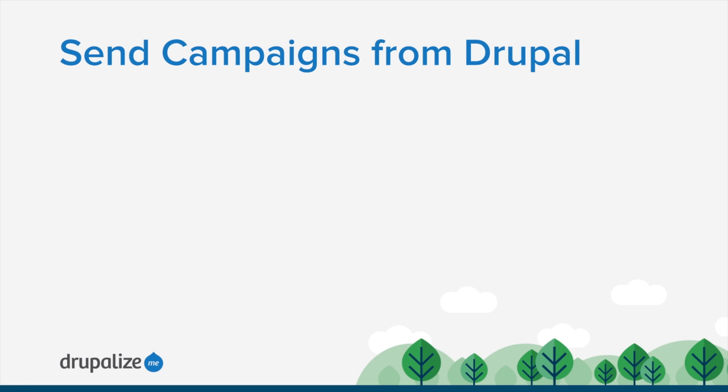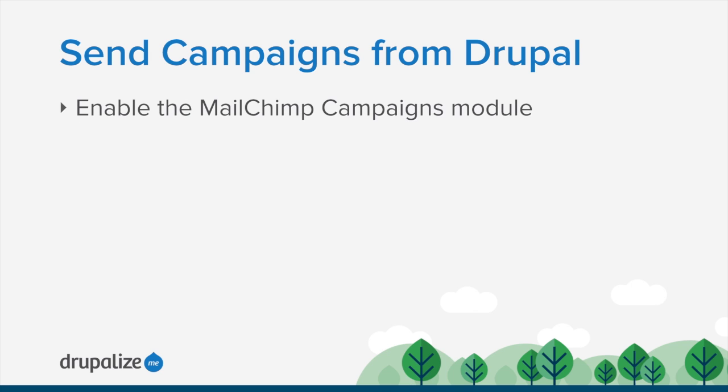In an earlier tutorial we looked at sending emails from the MailChimp UI. Now I want to look at sending a campaign to our MailChimp list via Drupal. In this tutorial we'll enable the MailChimp campaigns module and send a campaign through the Drupal user interface. We'll also talk about the various advantages and disadvantages of doing it this way versus via the MailChimp UI — the big win being that your site's administrators don't have to know anything about MailChimp.